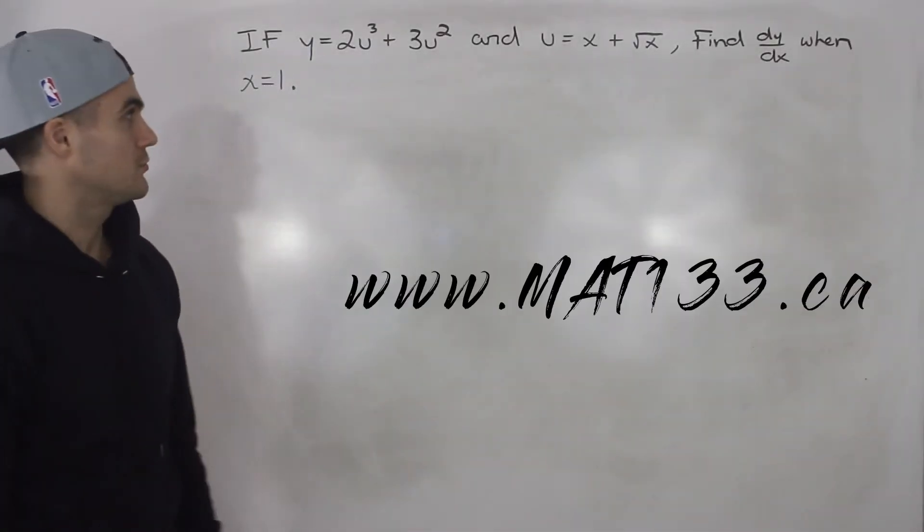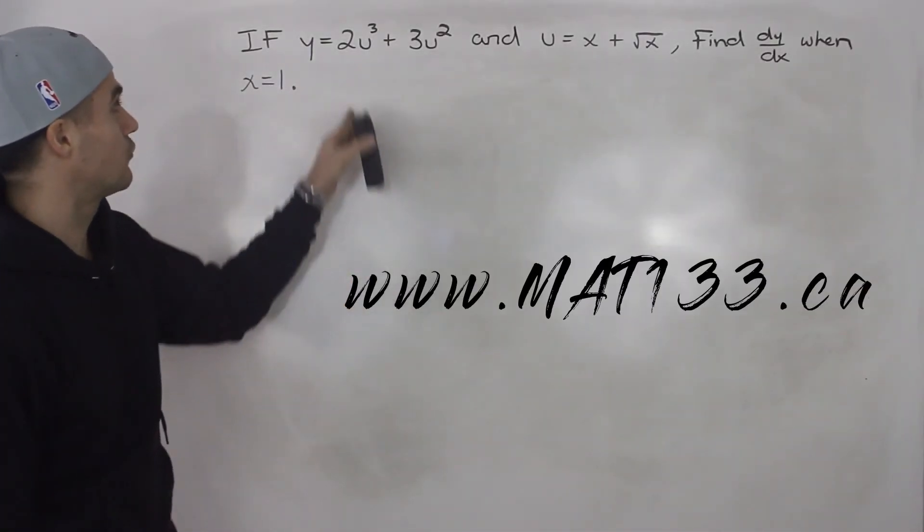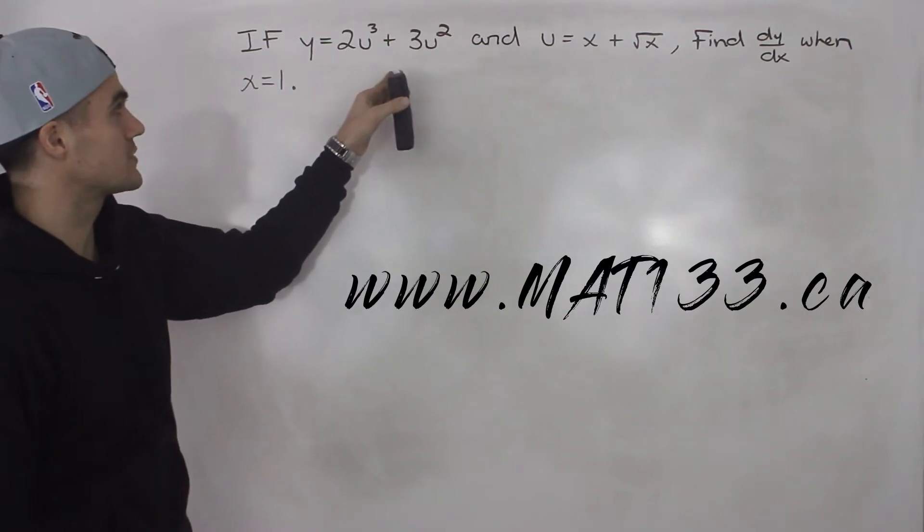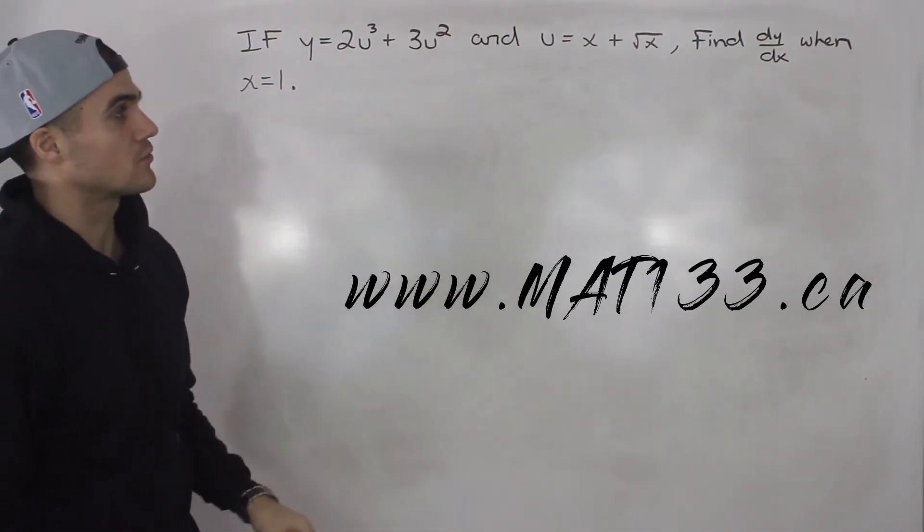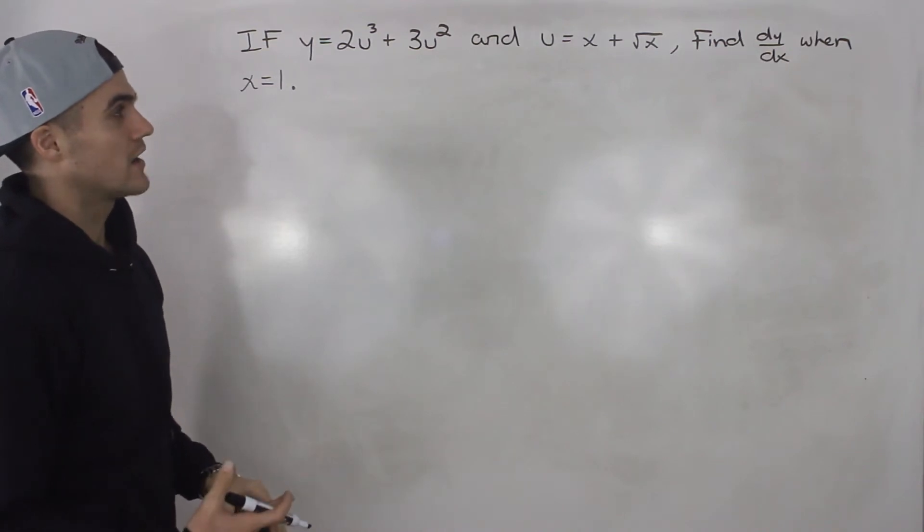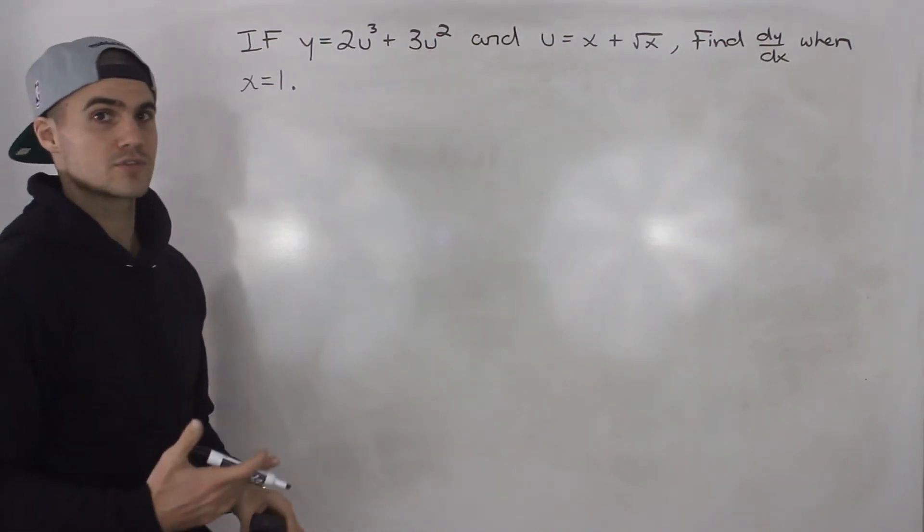What's up, everybody? Welcome back. Patrick here. Moving on to the next question. If y equals 2u cubed plus 3u squared, and u equals x plus the square root of x, find dy/dx when x equals 1.